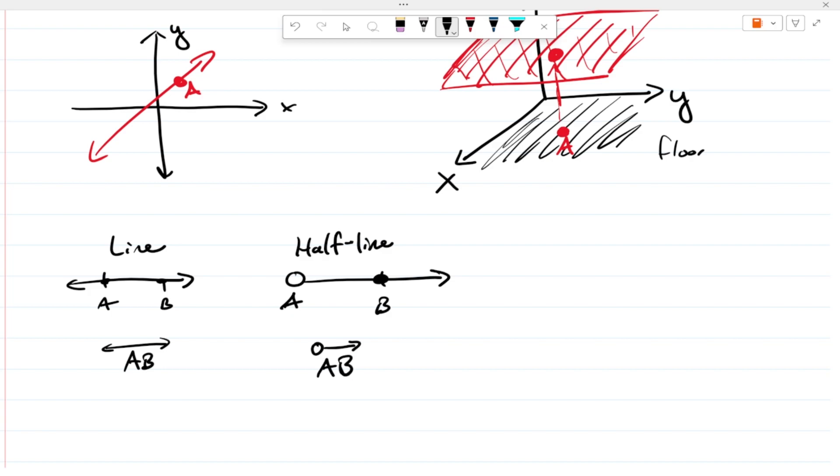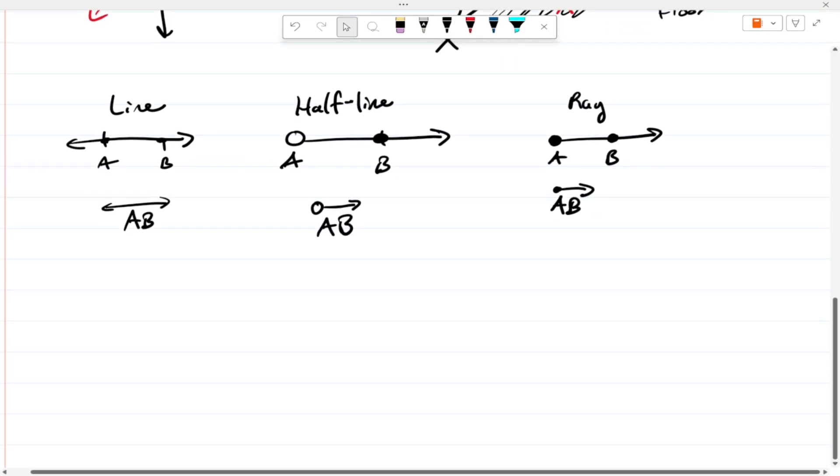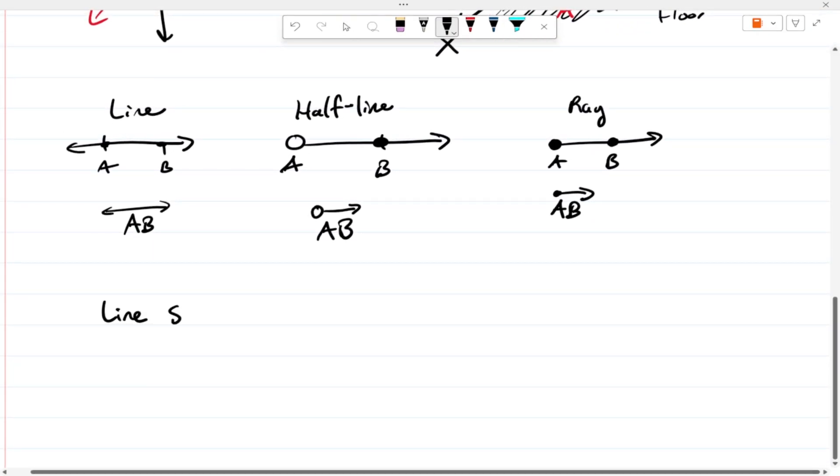That is different from a ray. Notice with a ray, both A and B have a closed dot. And finally, the last one is a line segment, which looks similar to a line, but it starts at A and it goes to B. And we can abbreviate that as just that symbol right there.